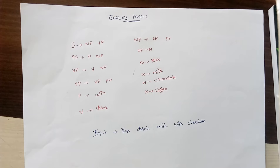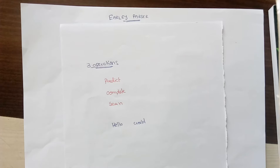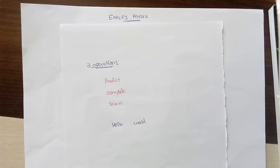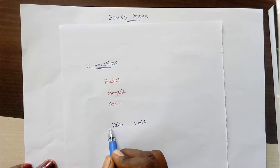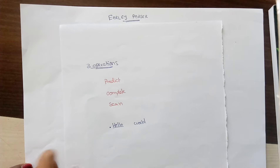The Earley parser has three main operations: predict, scan, and complete. Predict is used to predict what will be the next step — what non-terminals we want to expand in the next step. Scan is to check what has already been matched with the input — we check whether the input belongs to the grammar and compare it with the generated grammatical structure. Complete is to complete what has already been done; if an input is processed till some nth element, we check what non-terminals derive it. We use a dot symbol, similar to LR parsers.